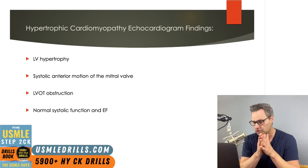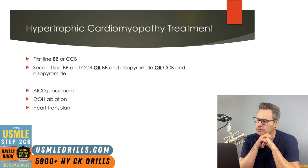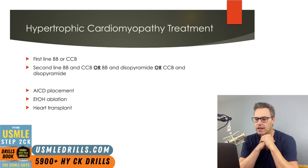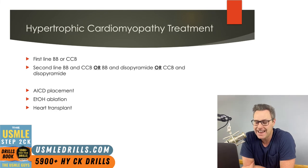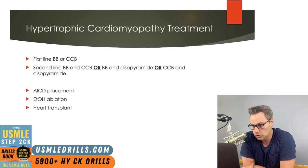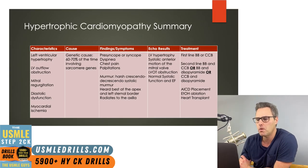You would expect normal systolic function and normal ejection fraction on echo for most patients. For medical management, first line is a beta blocker. If not tolerated or contraindicated, use a non-dihydropyridine calcium channel blocker. Second-line therapy combines one of these drugs with disopyramide. Outflow tract obstruction can be corrected with myectomy. An AICD will be placed for ventricular arrhythmias. Refractory cases not responding to other interventions will require a heart transplant as the only curative measure.